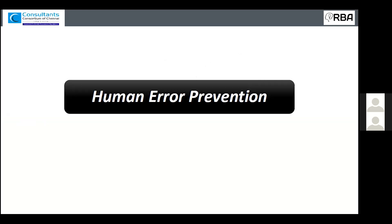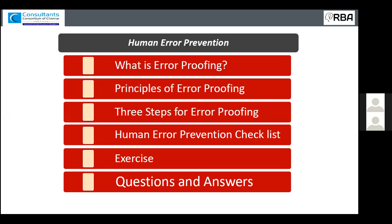Today's topic is Human Error Prevention — a very interesting topic applicable everywhere: not only manufacturing or process industry, but also service sector, education sector, health sector. Wherever a human is involved, we can apply this concept. It is a fundamental concept to help us avoid mistakes.